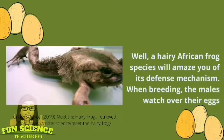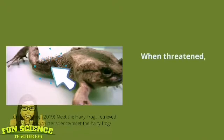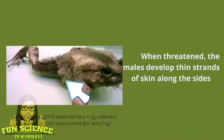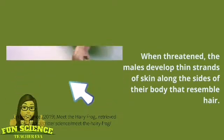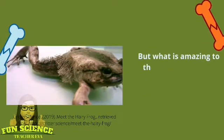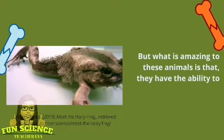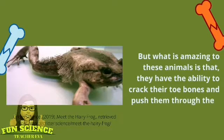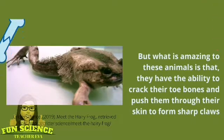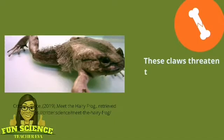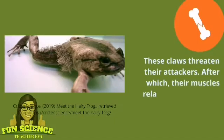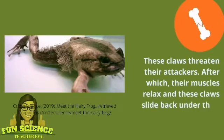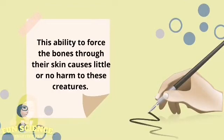When breeding, the males watch over their eggs. When threatened, the males develop thin strands of skin along the sides of their body that resemble hair. What is amazing is that they have the ability to crack their toe bones and push them through their skin to form sharp claws. These claws threaten their attackers, after which their muscles relax and the claws slide back under their skin. This ability to force the bones through their skin causes little or no harm to these creatures.